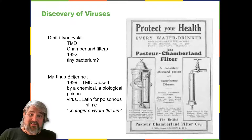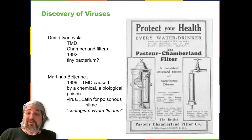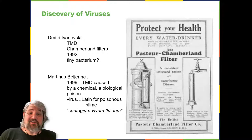So if a bacterium was not the cause of TMD, what could be causing the disease? Ivanovsky concluded the cause of TMD must be an extremely small bacterium or bacterial spore. Other scientists, including Martinus Beijerinck, continued investigating the cause of TMD. It was Beijerinck in 1899 who eventually concluded that the causative agent was not a bacterium, but instead possibly a chemical—like a biological poison we would describe today as a toxin.